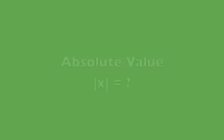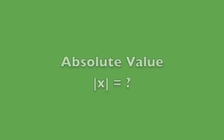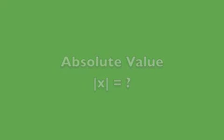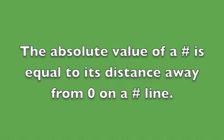I'm going to be working without my face on the screen because I thought it might be easier to explain if I had a number line. Alright, so absolute value — I'm sure you've seen these two vertical lines that represent x's absolute value, such as: what is the absolute value of x? Well, the absolute value of any number is equal to its distance away from zero, or the origin, on a number line.